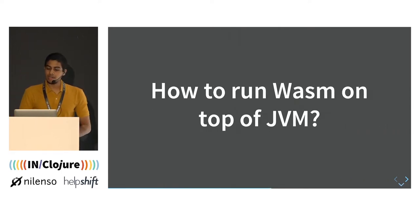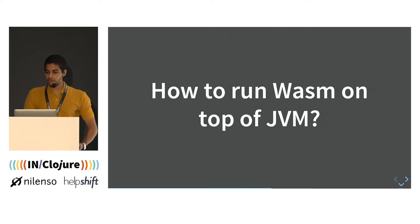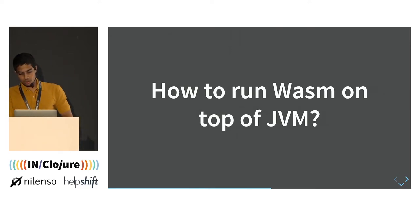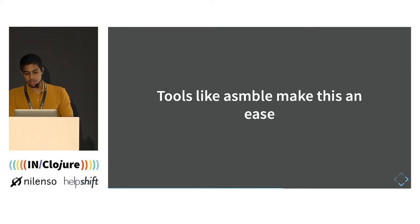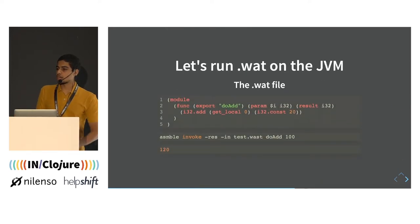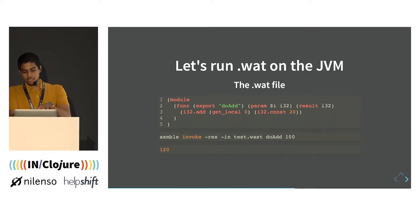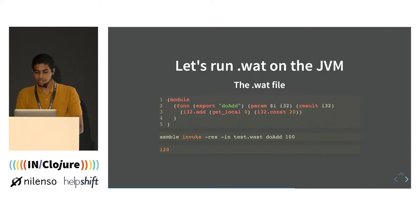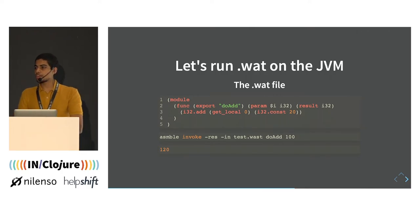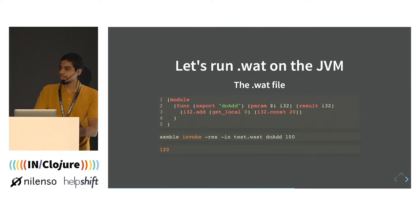The next topic is how to run Wasm on top of the JVM. If you want to interact with Java or Clojure, you can use a tool called ASMVLE. For example, you can run a .wat file on the JVM — here's a Wasm function that adds 20 to any given number. You can run it directly, and it runs on the JVM. You can even convert Wasm to a .class file and integrate it with Java.